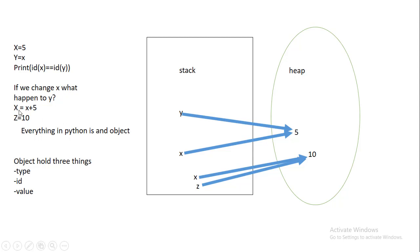What if we change x? For example, x equals x plus 5. Remember, integers are immutable, so what happens is Python creates a new object on the heap and assigns x to it.